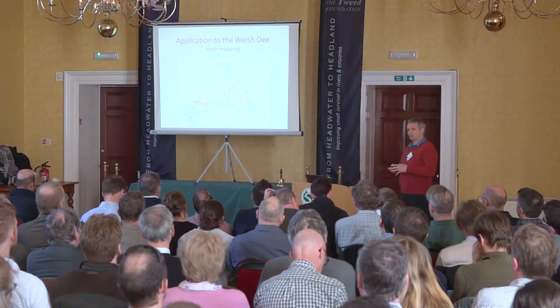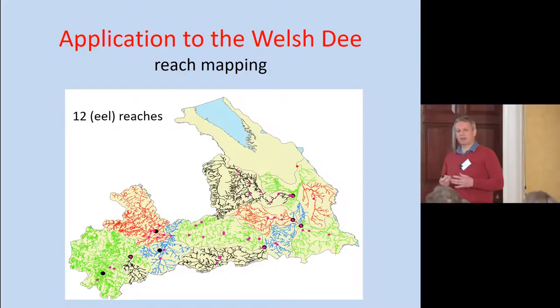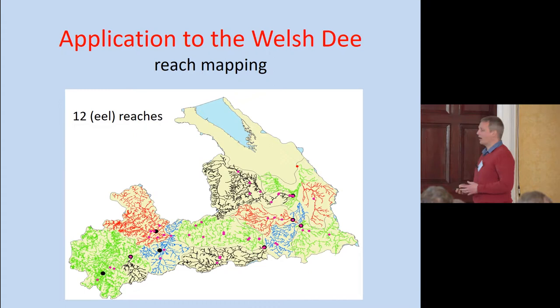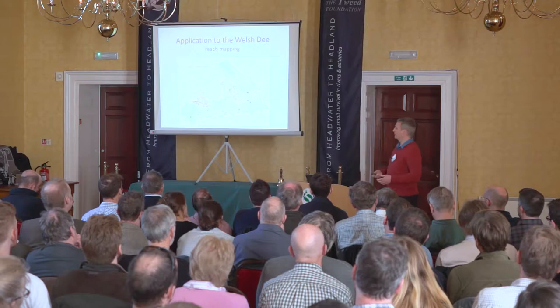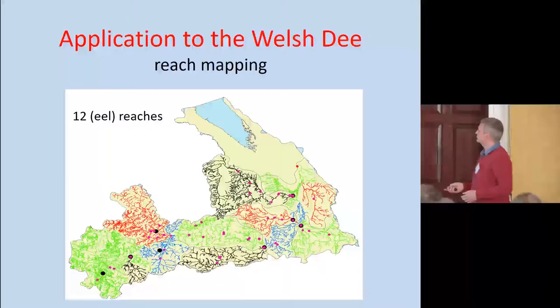So we thought we'd try this on the Welsh Dee. I chose the Welsh Dee primarily because we've already done it for the eels, so all of the mapping is there already, which makes it ideal. It's also got a lot of electrofishing surveys of juvenile salmon over multiple years. And they have an estimate of their smolt output based on the recapture of coded wire-tagged fish and returns to the Dee itself.